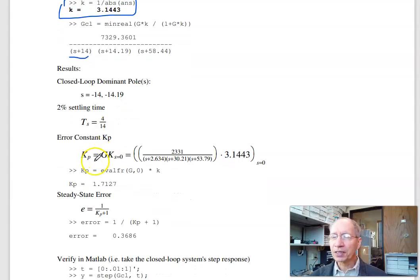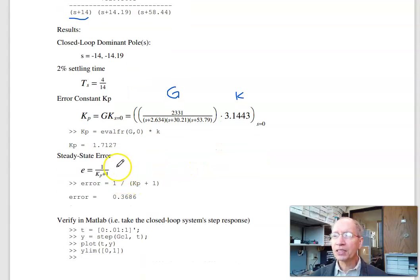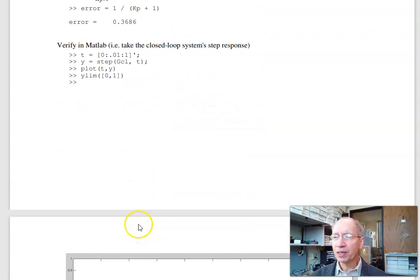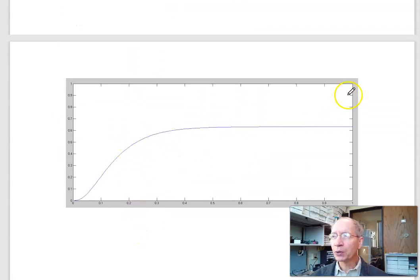Settling time is 4 over 14. The error constant, kp, is the DC gain. So here's k, here's G. What is the product as s goes to 0? That's kp. kp is 1.7. So the steady-state error is 1 over kp plus 1, 36%. If I plot the step response of the closed loop system, I don't go to 1. I'm missed by 37%. No overshoot. There's your settling time.